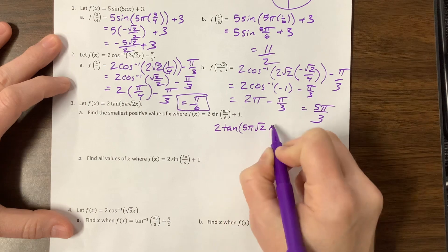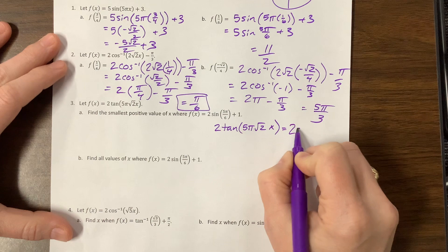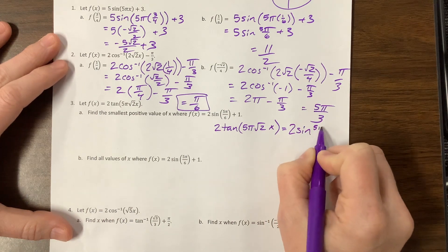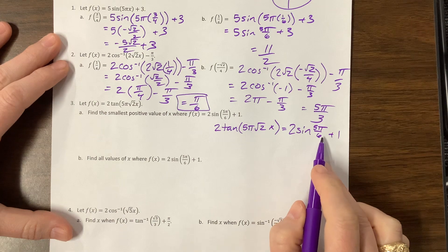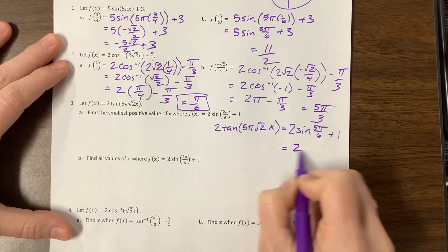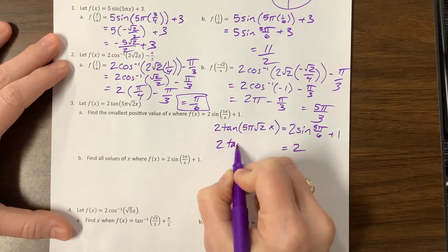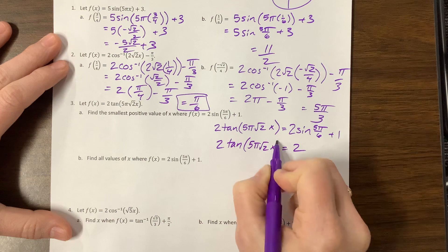I'm just going to work it over here. They're saying f(x) is 2 tangent of 5π√2x. I did see something kind of ridiculous on AP Classroom, so that's why I was trying to give you something ridiculous to practice. Sine 5π/6 plus 1, sine of 5π/6 is 1/2 times 2 is 1 plus 1 is 2. For the sake of space, I'm just going to do all that in my head.